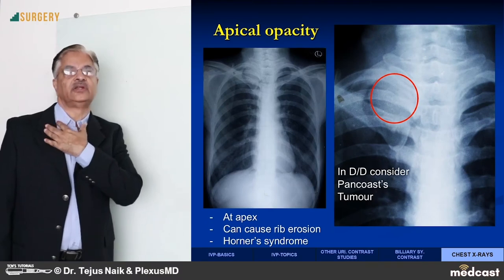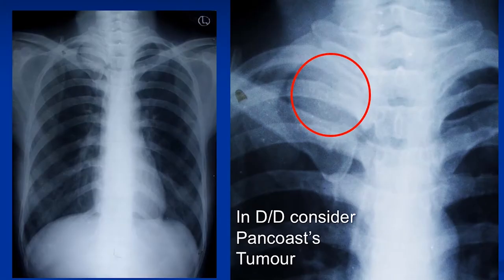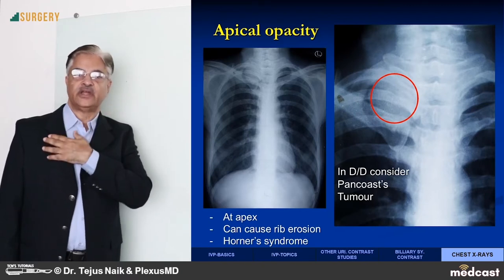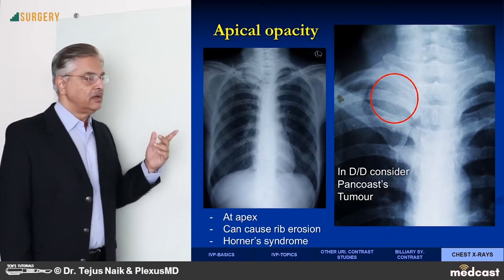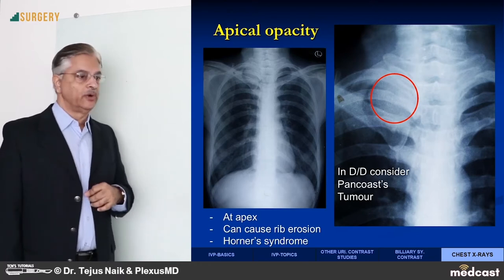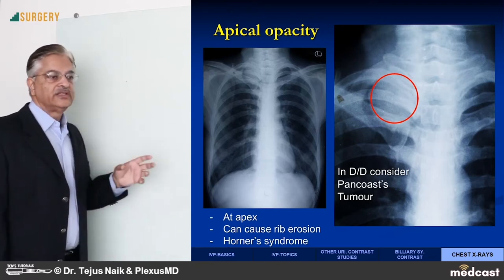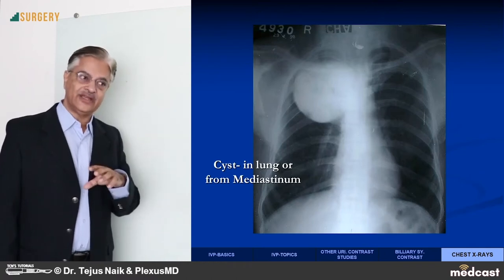Pancoast tumor is a malignant lesion in the upper part of the lung, generally on the right, and it can give rise to erosion of the first rib and affection of the sympathetic trunk. That is why, in differential diagnosis, this can be a Pancoast tumor. This is a well-defined, regular opacity touching the mediastinum.